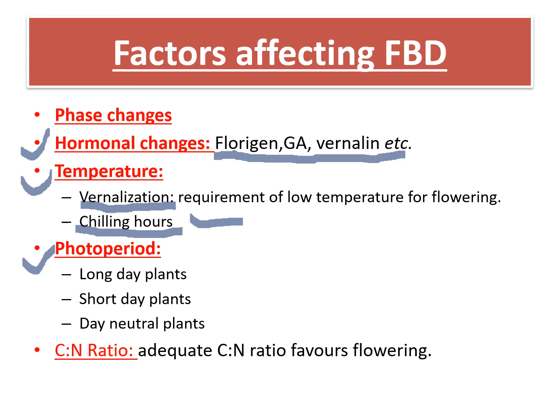Photoperiod plays an important role in flower bud differentiation. The next factor is the carbon-nitrogen (C:N) ratio. The carbon-nitrogen ratio of a plant is very important for flower bud differentiation. If the C:N ratio is adequate, it means the plant has enough carbohydrates or energy that can be diverted for flower bud differentiation. When the C:N ratio is low — meaning nitrogen is more — it favours vegetative growth. So for flower bud differentiation, the carbon-nitrogen ratio must be adequate, and it plays an important role in flower bud differentiation.